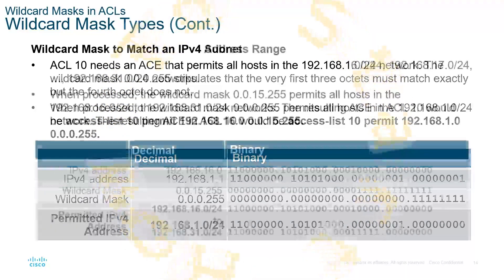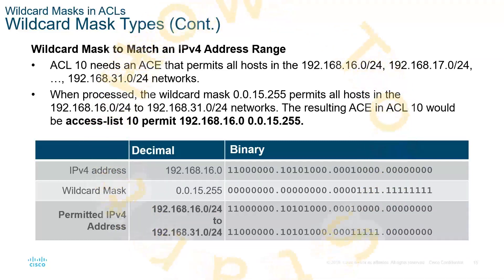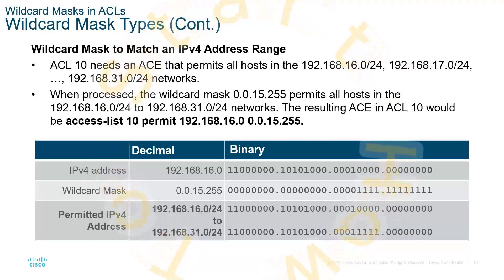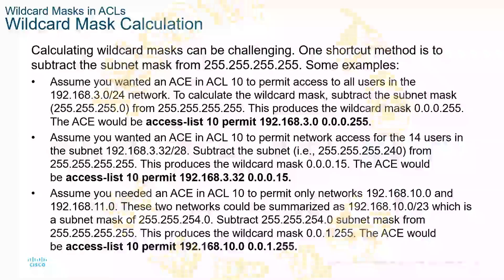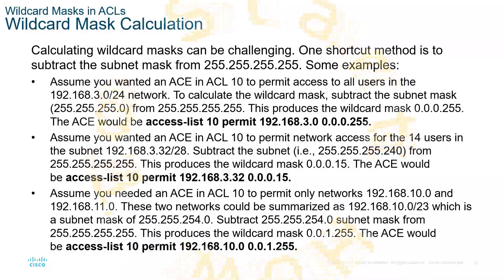If we want to match an address range, we do the same thing: use a wildcard mask with the network ID. You take the subnet of the network ID, inverse it, and that would be the appropriate result. To calculate wildcard masks: take the subnet, write it out in binary, flip the ones and zeros — that is our wildcard mask. Then depending on the type of ACL you're trying to do, you can do it either based off of a network or a single host.